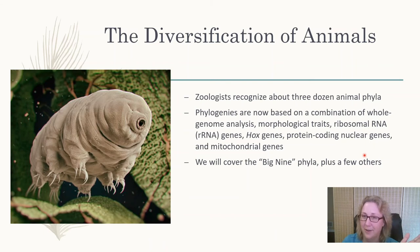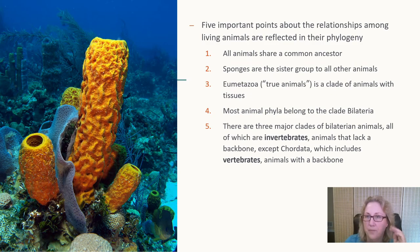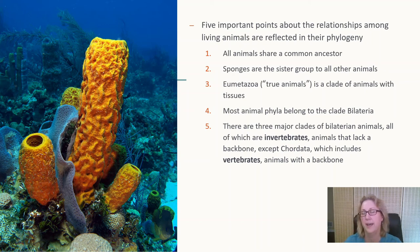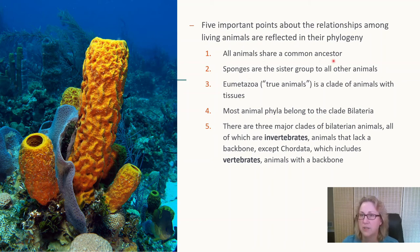This has made a huge difference in animal phylogeny, with far fewer arguments now that we can sequence DNA cheaply and easily. Five important points about relationships among living animals: first, all animals share a common ancestor — the animal kingdom is monophyletic, a single clade with one ancestral species.